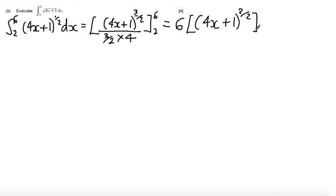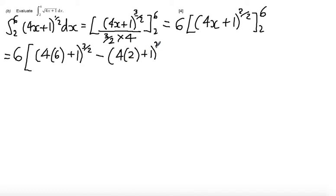So substituting that value in, I get 6 times 4 lots of 6 plus 1 to the power 3 over 2, minus 4 lots of 2 plus 1 to the power 3 over 2. At this point, I've gone through the substitution, and so all I want to do is evaluate this using a calculator.